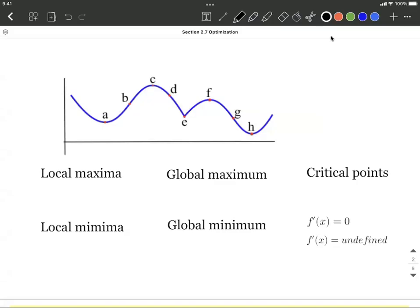We're given a graph with several points lettered here. I've gone ahead and named them ABC all the way through H. We want to identify local maxima, which would be a maximum, global maximum, local minima and global minimum, as well as critical points as we take a look at this.